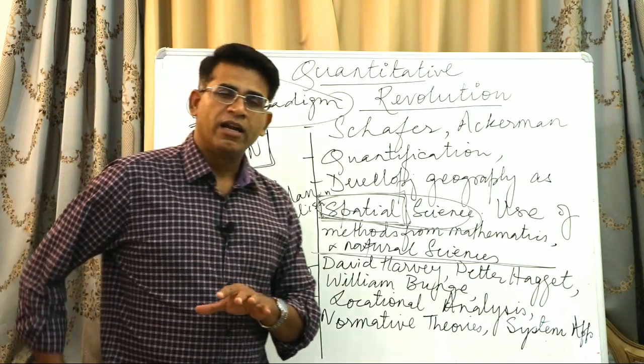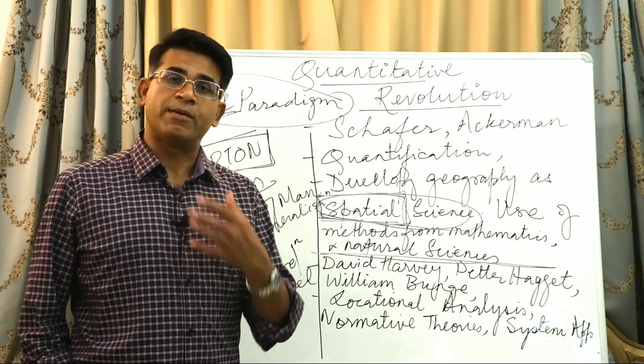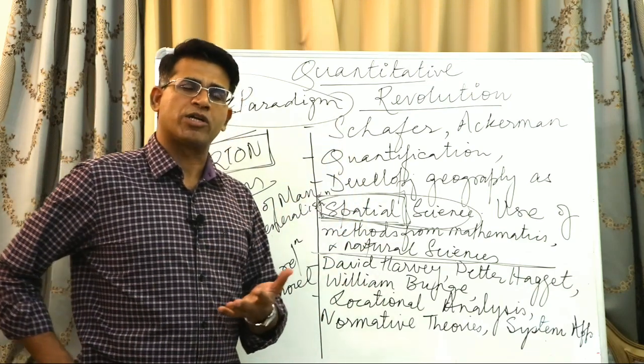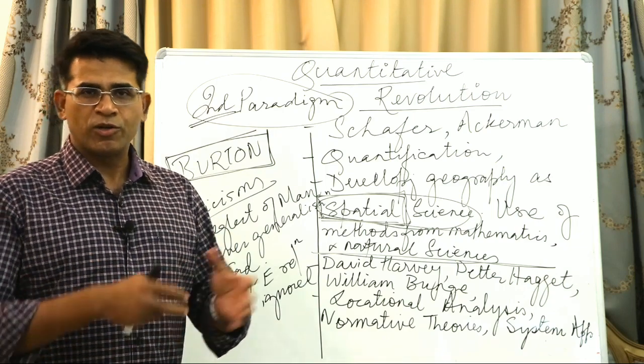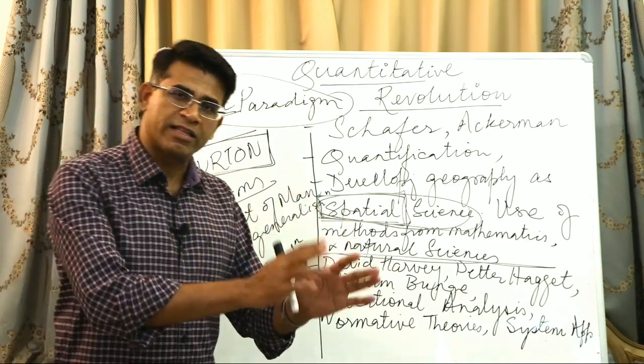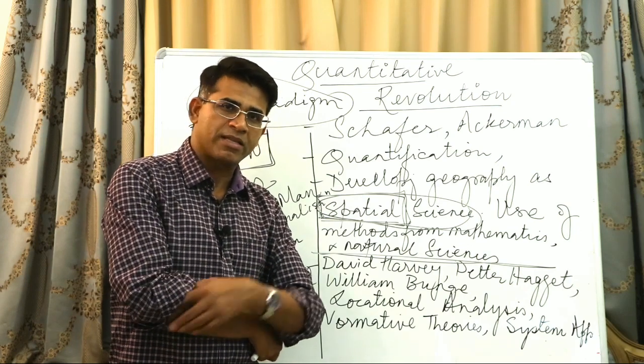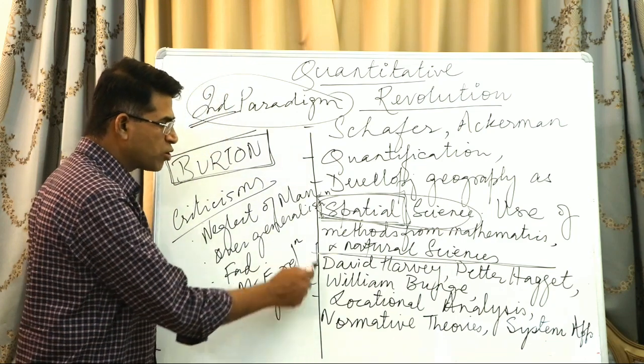This has been a common trend. Many quantifiers and supporters of mathematical models got disillusioned with the mechanical treatment of geography. Eventually, some of them converted to Marxist and radical geographers by the time it is the 1970s. So four or five names you should know.